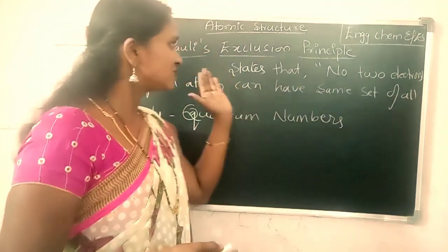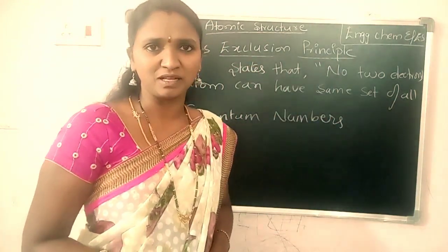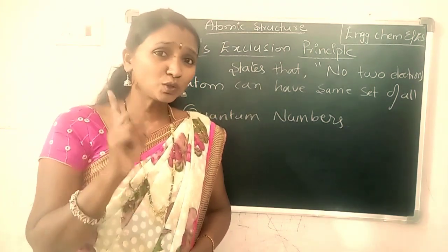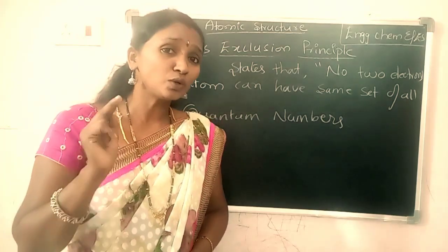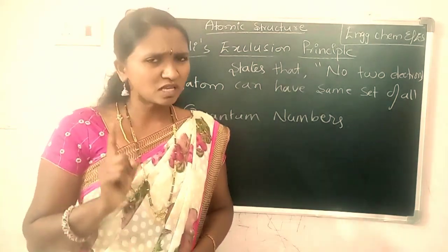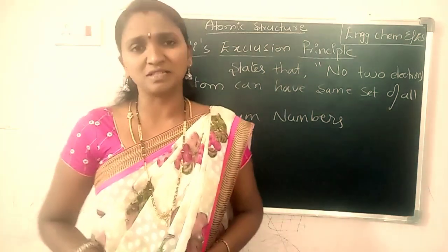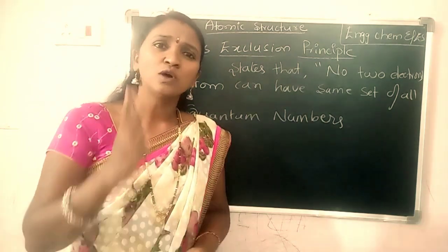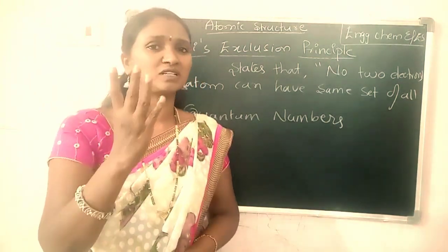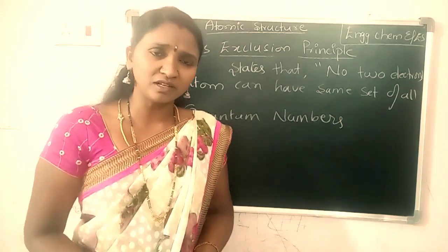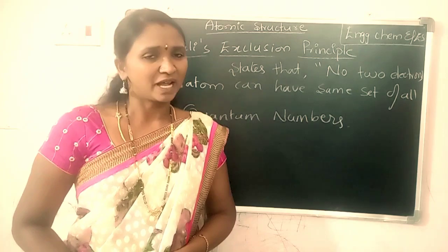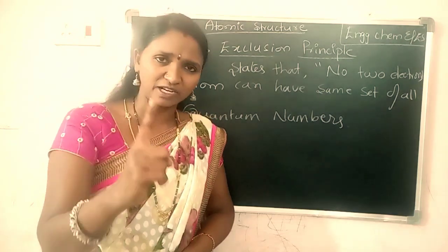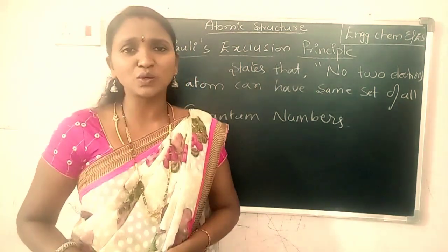So this is the statement of Pauli's Exclusion Principle. Any two electrons of an atom does not have all four same quantum number values. They may differ by at least one quantum number value. Even if three quantum number values are the same, they must differ by at least one.